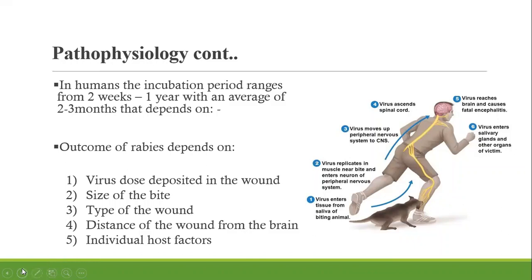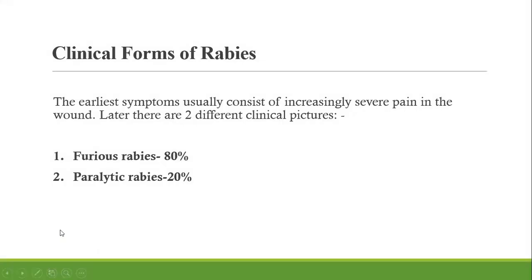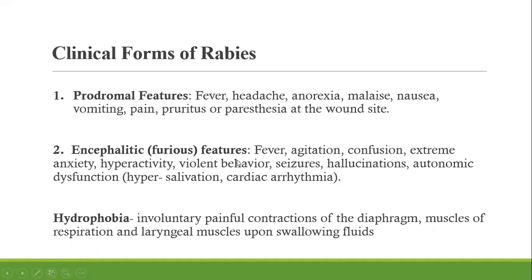Host factors like immunity may also play a role in how fast rabies progresses. The disease can present first with early non-specific symptoms like fever and headache. From there, two distinct classical forms emerge: furious rabies, seen in 80% of cases, and paralytic rabies, seen less often. Prodromal features include fever, headache, nausea, and vomiting. Furious rabies then presents with agitation, as the virus affects the brain and central nervous system, causing encephalitis and CNS symptoms.